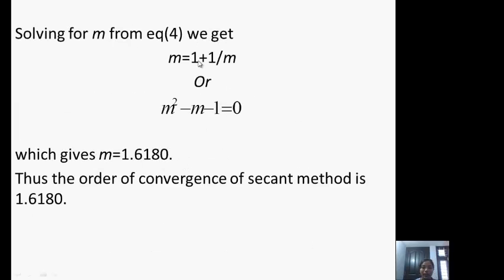Solving for m from equation 4 we get m = 1 + 1/m, or m^2 - m - 1 = 0, which gives m = 1.6180. Thus the order of convergence of secant method is 1.6180.